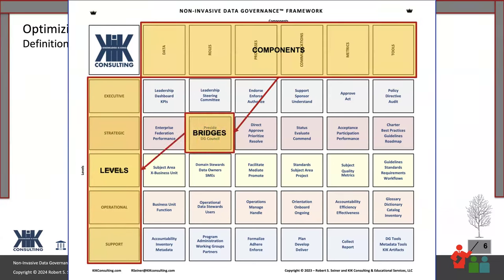Down the left-hand side, you've got the executive level all the way down to the support level. For example, looking at the roles column: at the executive level, there needs to be some type of steering committee; at the strategic level, a council; at the tactical level, subject matter experts, data domain stewards, and data owners; all the way down to operational stewards and the people that administer your program at the support level. IT is also in the support level because IT and data governance need to work hand in hand.